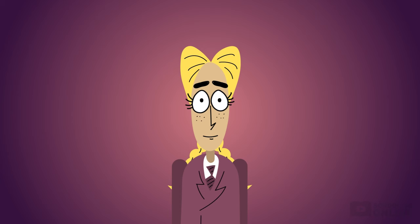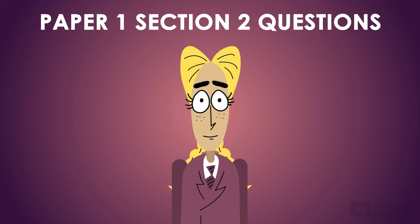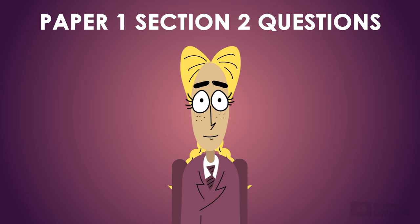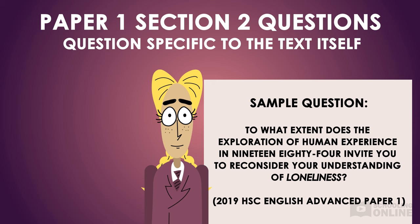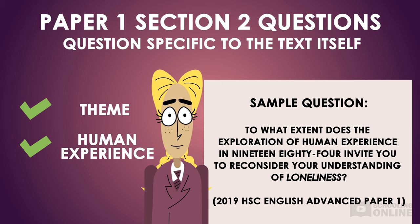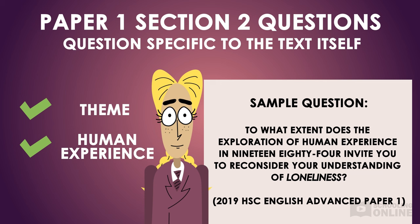There are a few different types of questions you need to be prepared for. For example, the question might be specific to the form of the novel — that means you'll need to be familiar with Orwell's main literary techniques and the overall structure of the novel. You may also be asked a question specific to the text itself, perhaps a theme or human experience found in the novel. Alternatively, you could also be required to respond to a stimulus, like a statement drawn from the module — that means you need to be familiar with all the main ideas in the Texts and Human Experiences rubric.